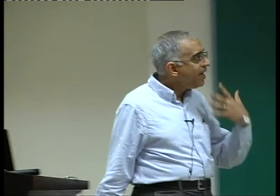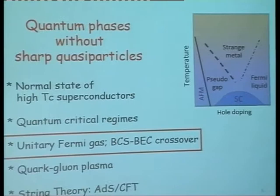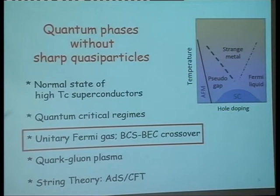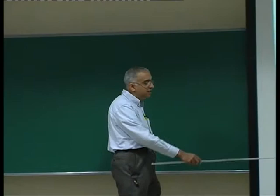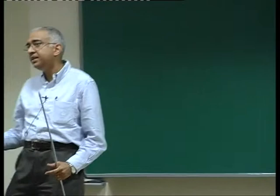My motivation for studying this is because I spent a large fraction of my career thinking about quantum phases which do not support sharp quasiparticles. This is a problem that faces us in many different areas of solid-state physics, most strikingly in the normal state of the high-temperature superconductors, also in quantum critical regimes. Rather remarkably, this is also a problem facing nuclear physicists working on relativistic heavy-ion colliders, and even string theorists thinking about AdS-CFT. But I am firmly going to focus on the unitary Fermi gas in the BCS-BEC crossover, where I feel some of the most detailed experiments on viscosity will happen.